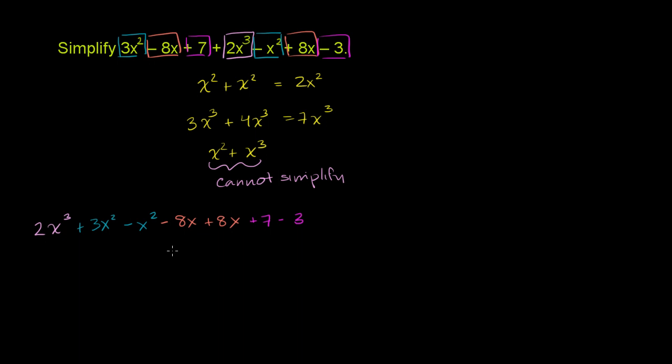So all I've done is I've really just used the commutative property of addition to change the order, to change the order at which I'm doing this. I've just rearranged the thing so that the like terms are next to each other.